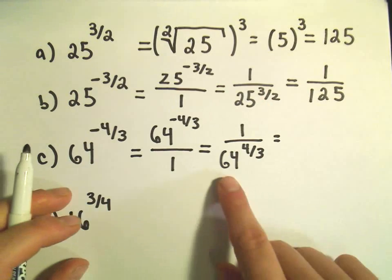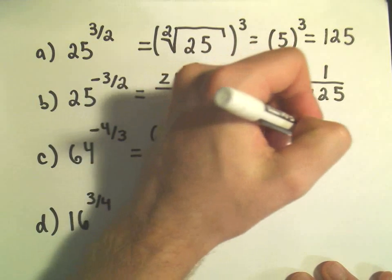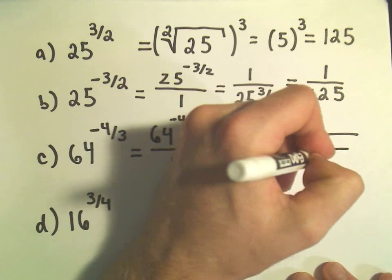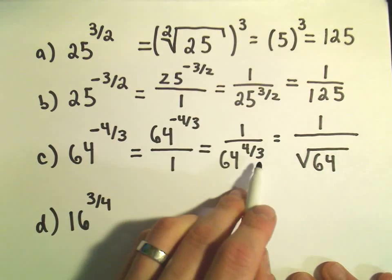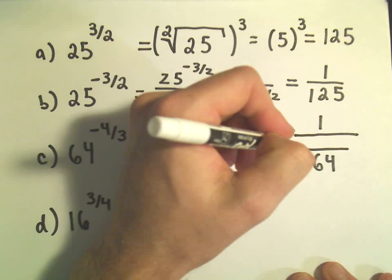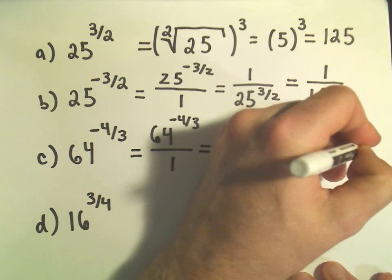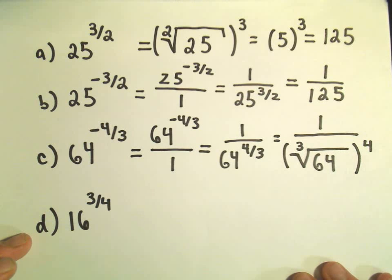And again, now I'm going to rewrite this using my radical notation. So it says we write a root. It says whatever number's on the bottom, that's what our root is. So here we're going to have the third root of 64, and we're going to raise all of that to the fourth power.